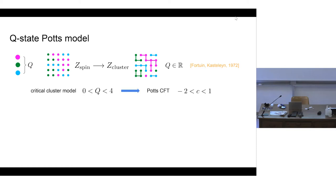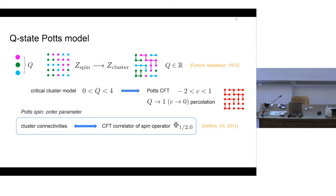For the critical model, for q between zero and four, the scaling limit is described by the Potts CFT, which corresponds to the central charge c between minus two and one. We can then take the limit q goes to one — namely that there is only one possible color for the clusters — which recovers the percolation model, corresponding to central charge c equals zero. The Potts spin serves as an order parameter for the percolation, and the cluster connectivities are given by CFT correlation functions of the spin operator, written in a Kac notation with indices (1/2, 0).